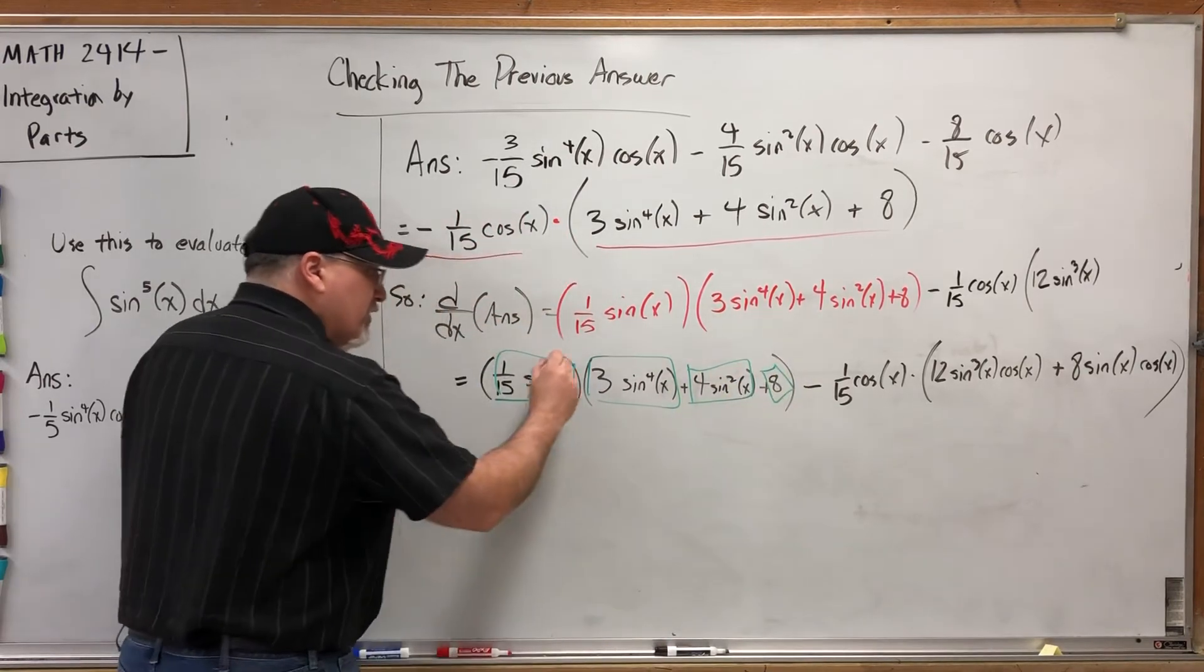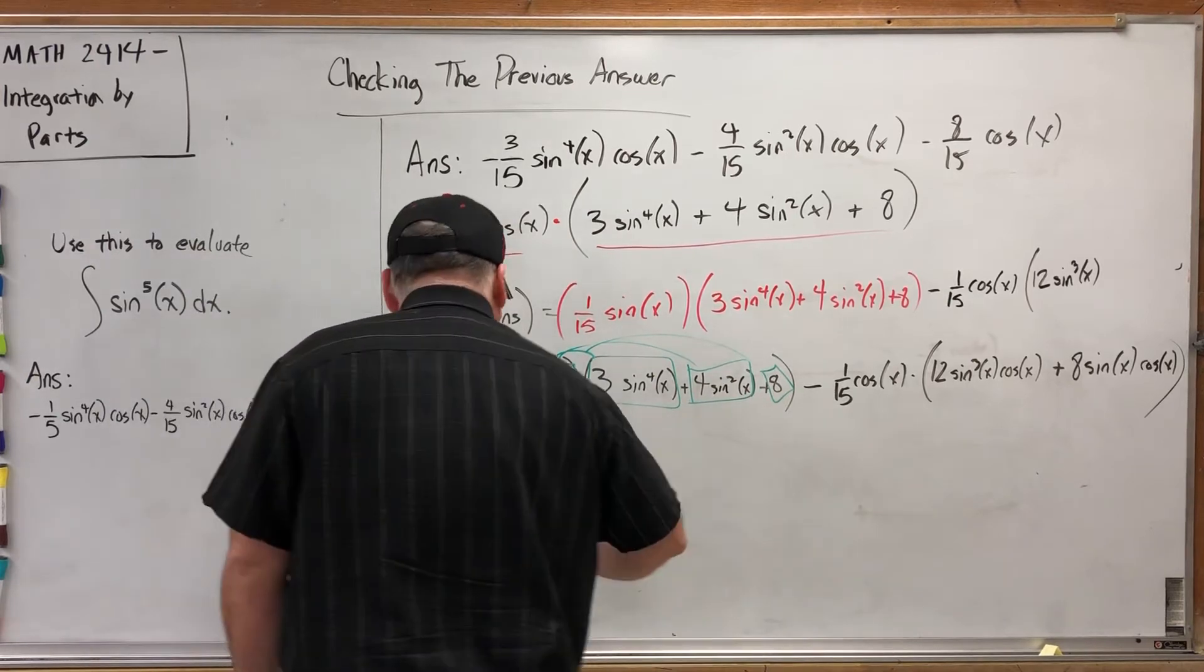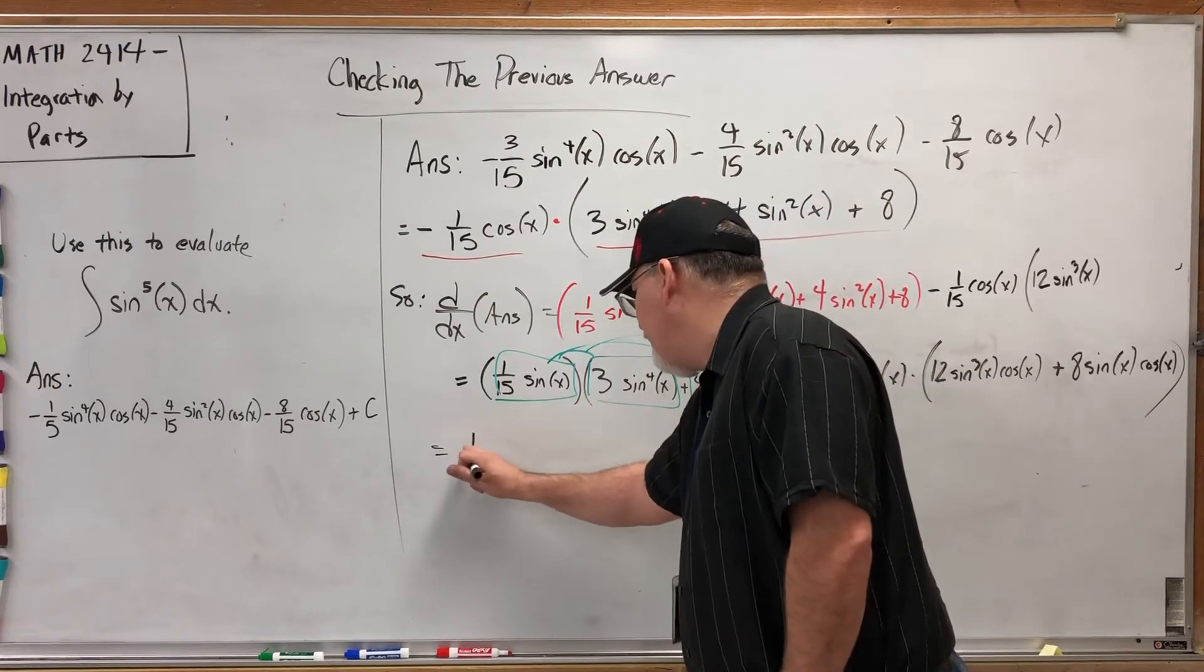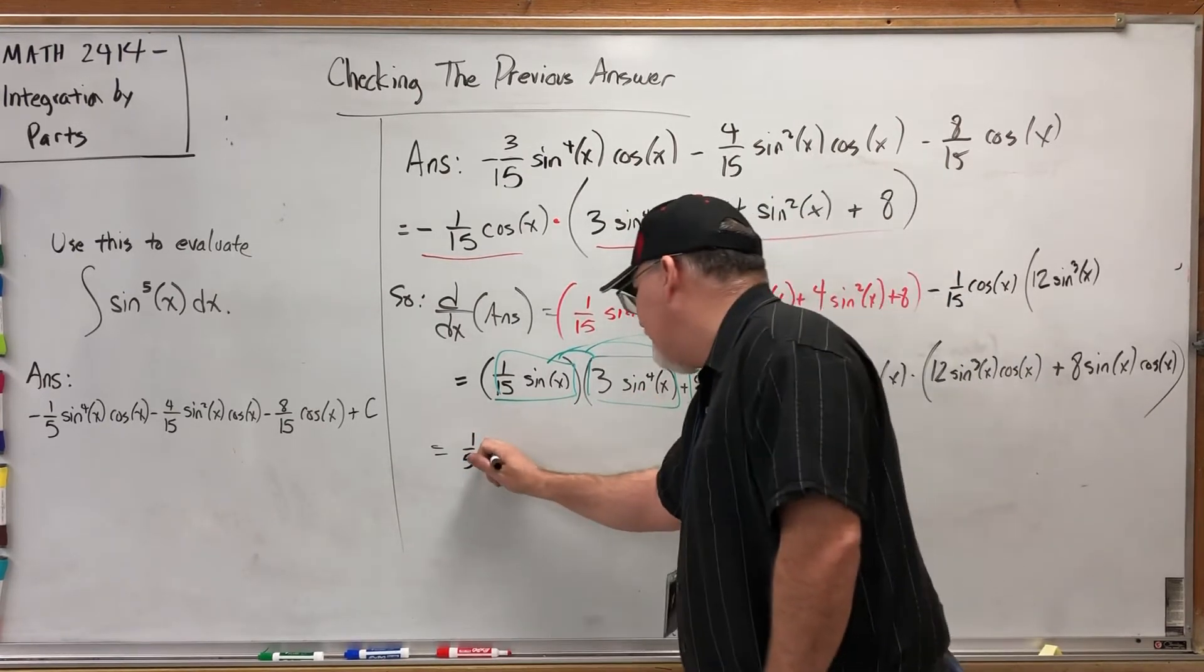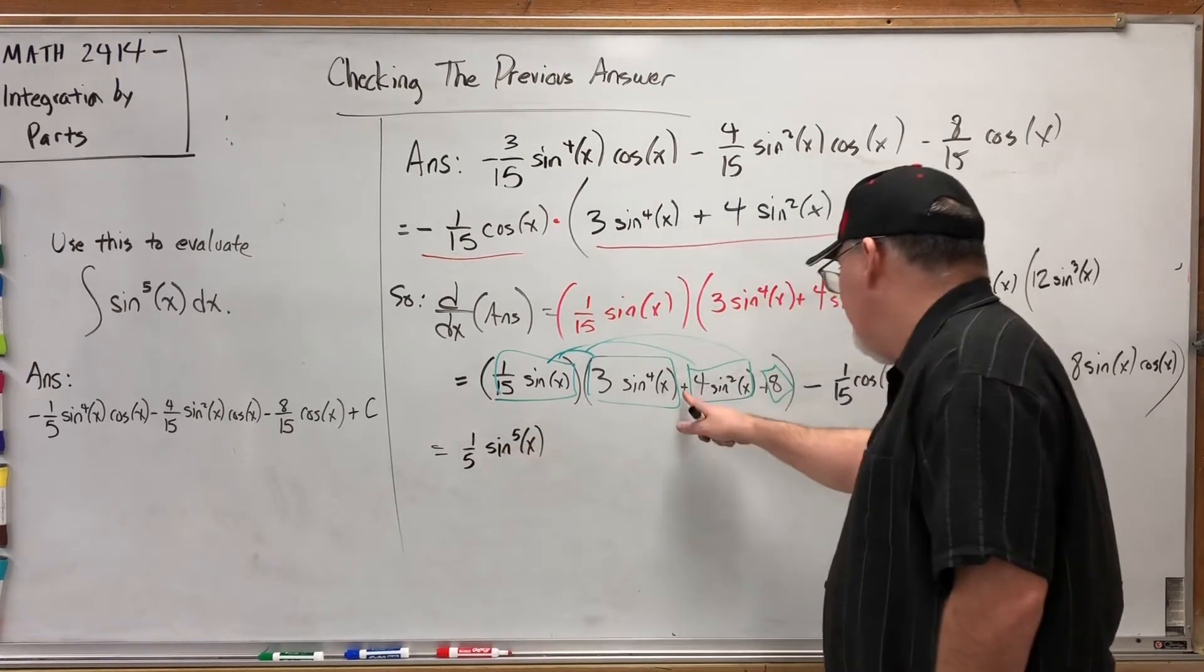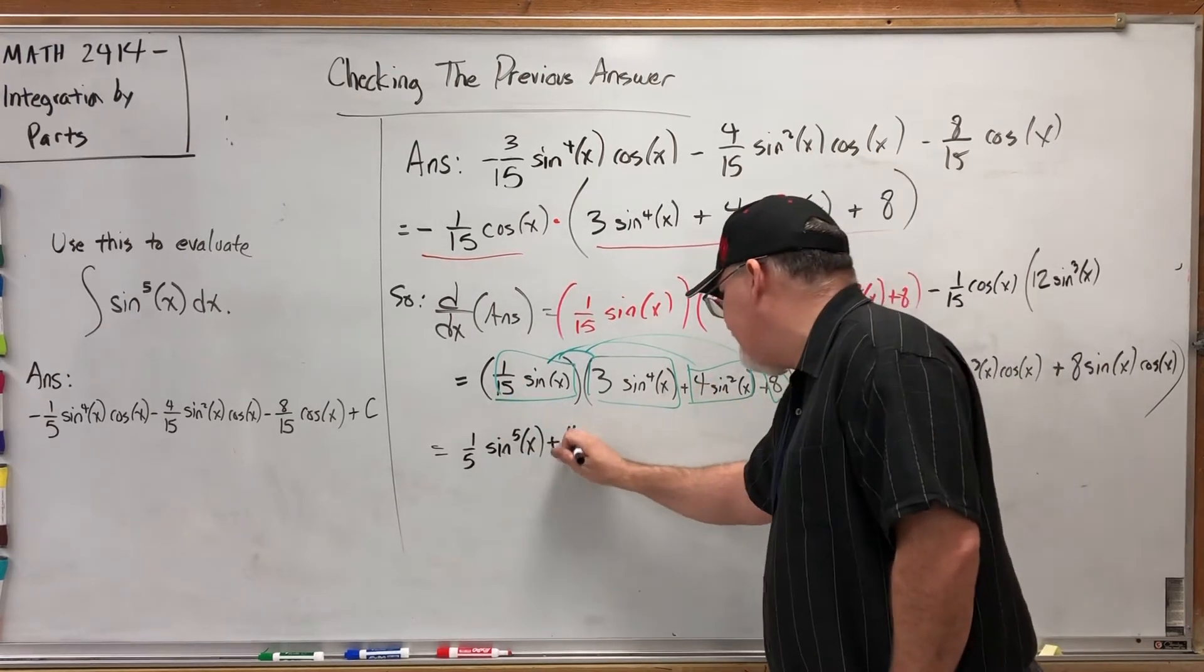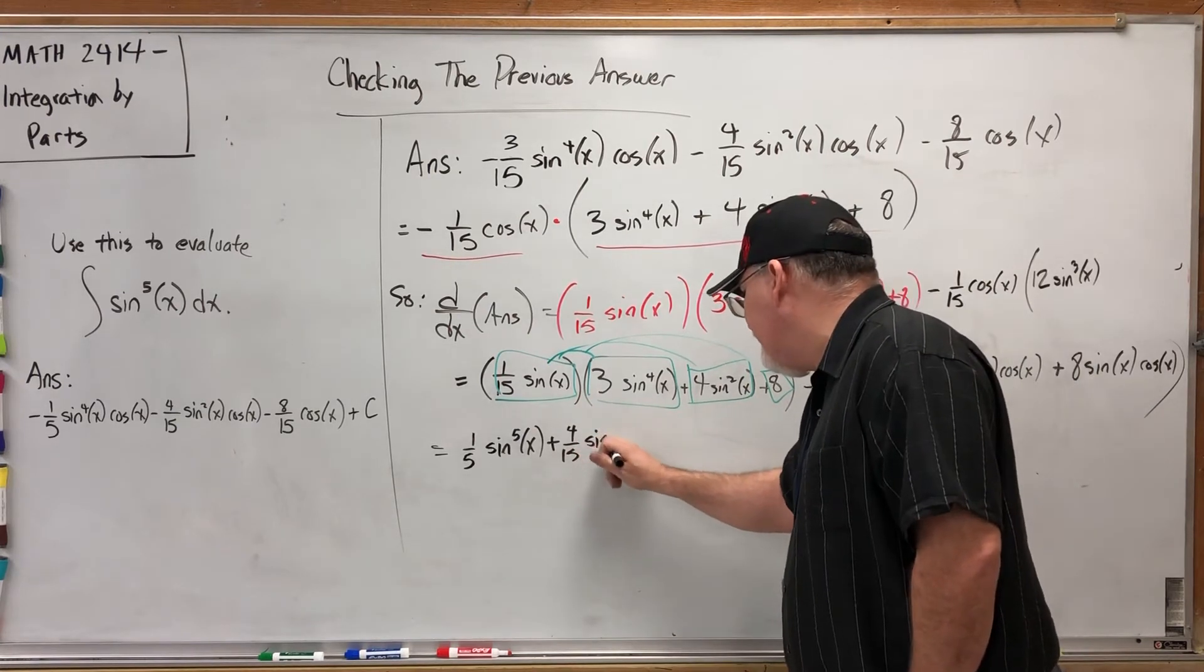We need to distribute this factor to all three parts of this addition problem. So this will get distributed three times over. Let's see what that means. We'll get three-fifteenths, which reduces to one-fifth, sine X times sine to the fourth X, so there's a sine to the fifth X. That's encouraging—we need some of those. Plus one-fifteenth times four is four-fifteenths sine X times sine squared is sine cubed. We don't need any of those. I hope they disappear in a moment.